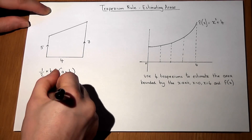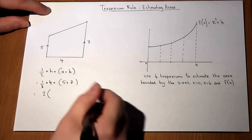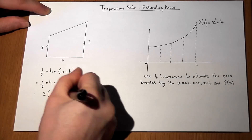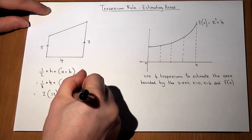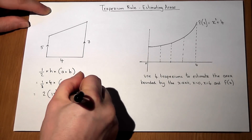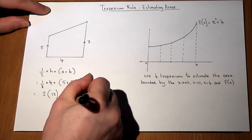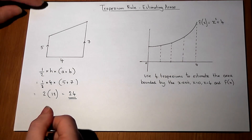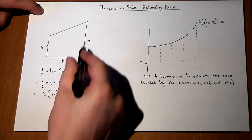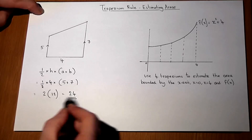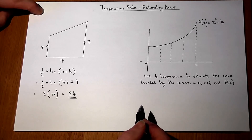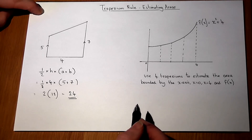Half of 4 is 2, and 2 lots of 12 would be 24. There are no units given in the question, so we'll keep it purely as an answer without units.